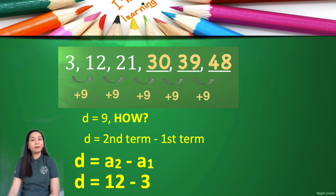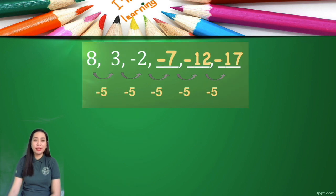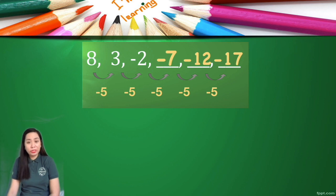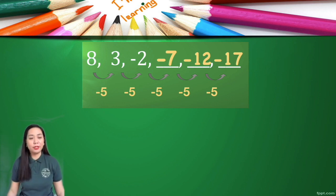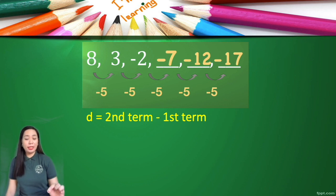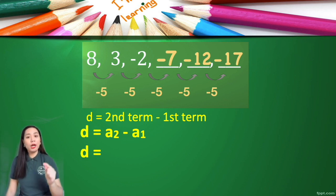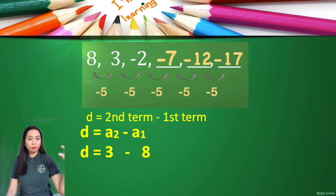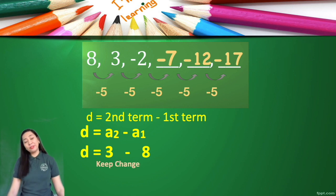For 8, 3, negative 2, negative 7, negative 12, negative 17 — you can use any consecutive numbers. Using the first two: a sub 2 minus a sub 1, that is 3 minus 8. Our rule for subtracting integers is keep, change, change — keep your first term, change the operation, and change the sign of the next term. So 3 plus negative 8 gives negative 5.